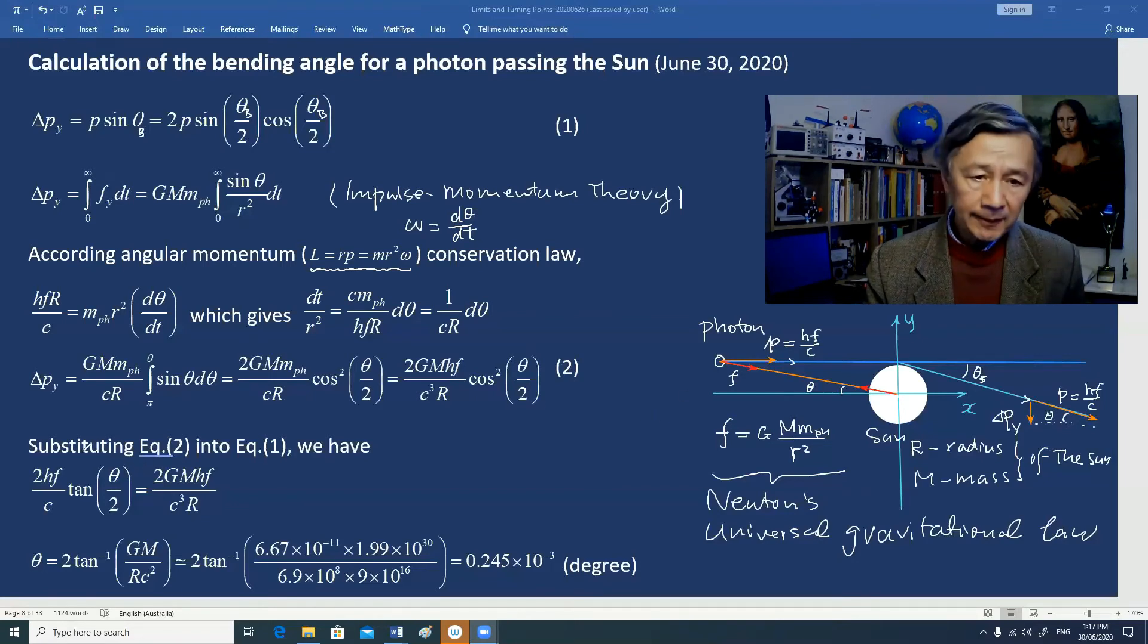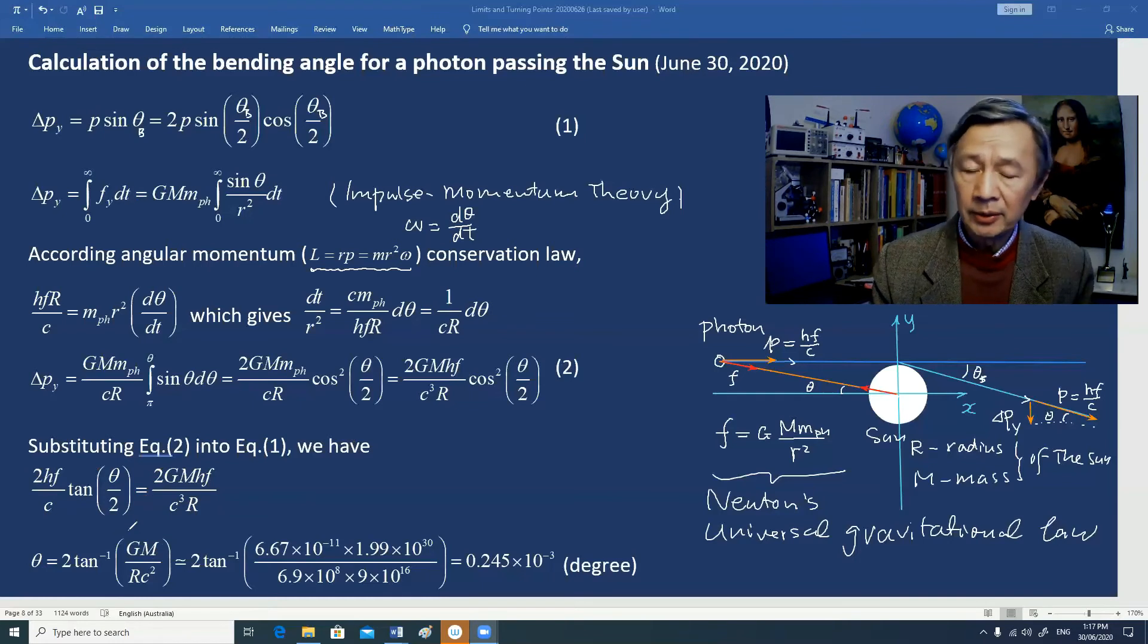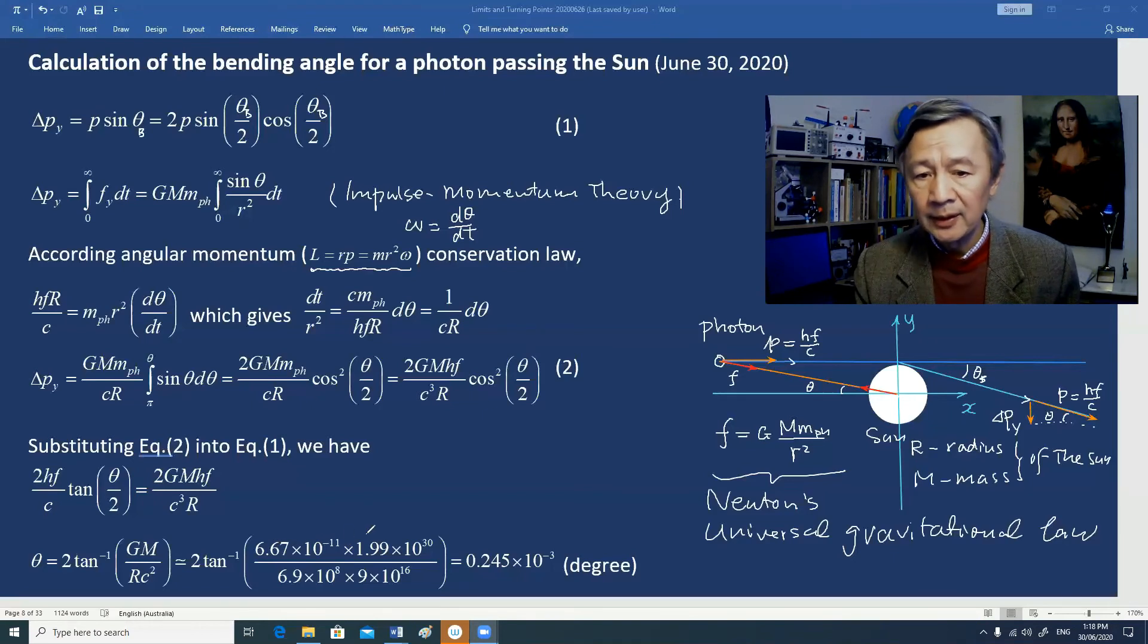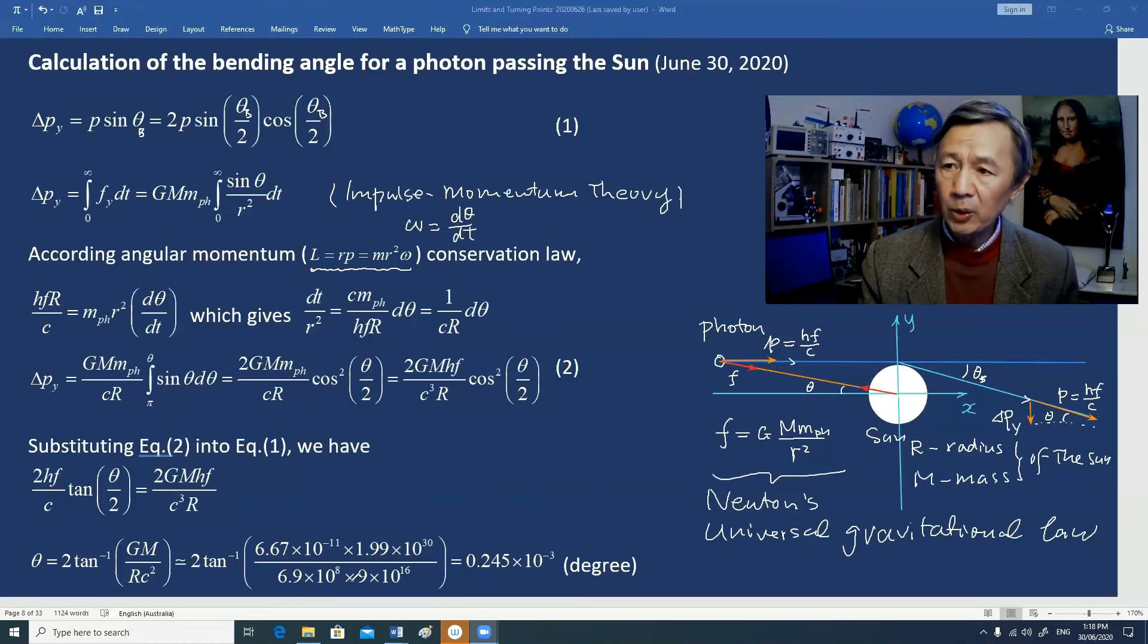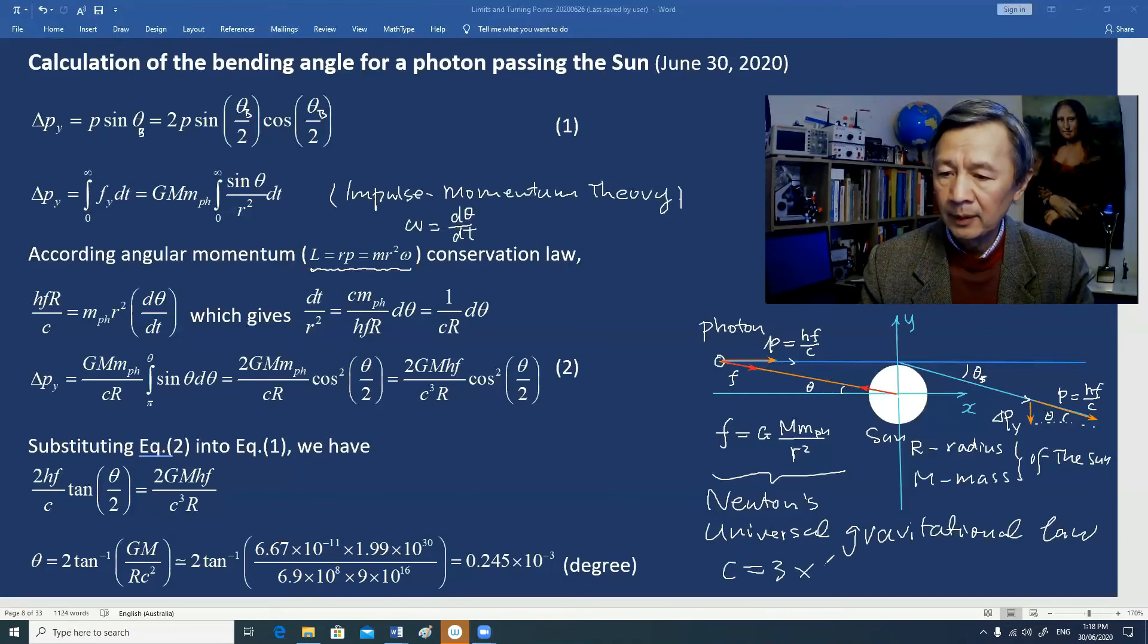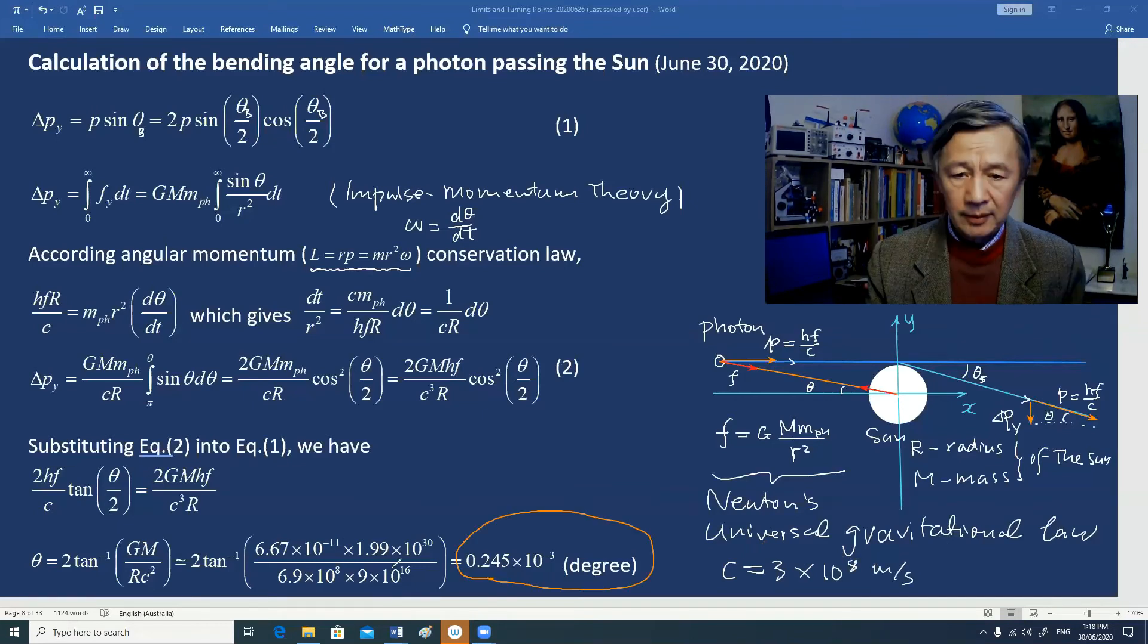If we substitute equation two into equation one, we obtain this simple formula. From this equation, we can immediately derive the angle. Here we have used the gravitational constant, the mass of the sun, the radius of the sun, and c squared where c equals 3 times 10 to the power of 8 meters per second. Finally, we obtain this numerical result.